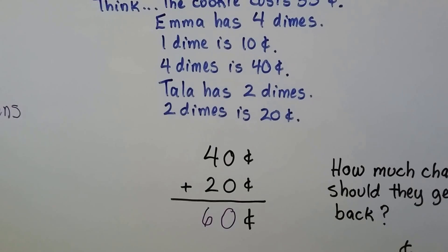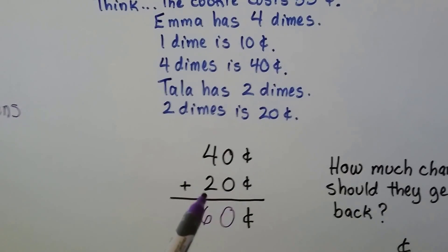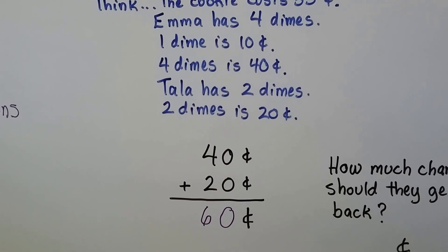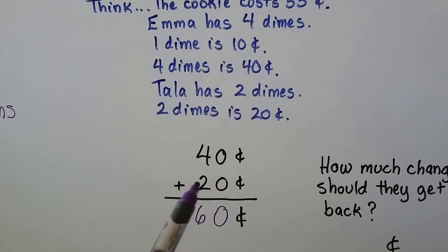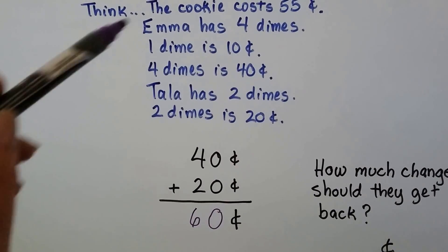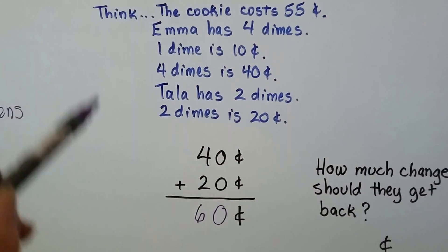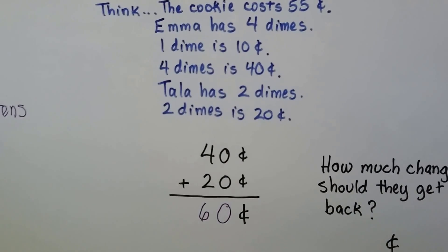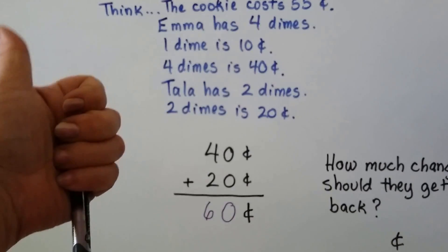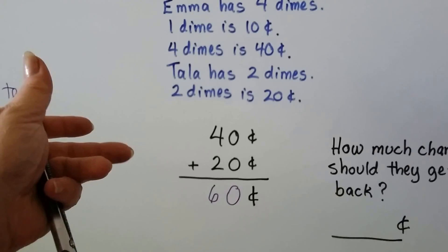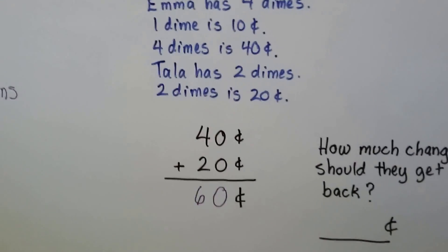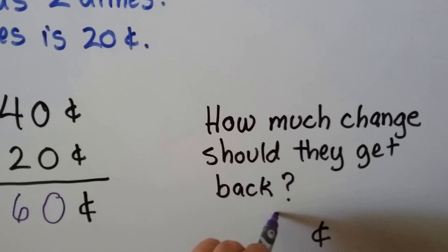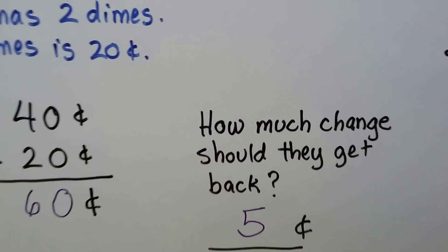So how much change would they get if they gave the cookie person the 60 cents? They gave them 60 cents, so we start from the price, 55, and we count up to the amount of money they gave them, right? Remember from last chapter? 55, 56, 57, 58, 59, 60. They would get five cents back. Five cents change.